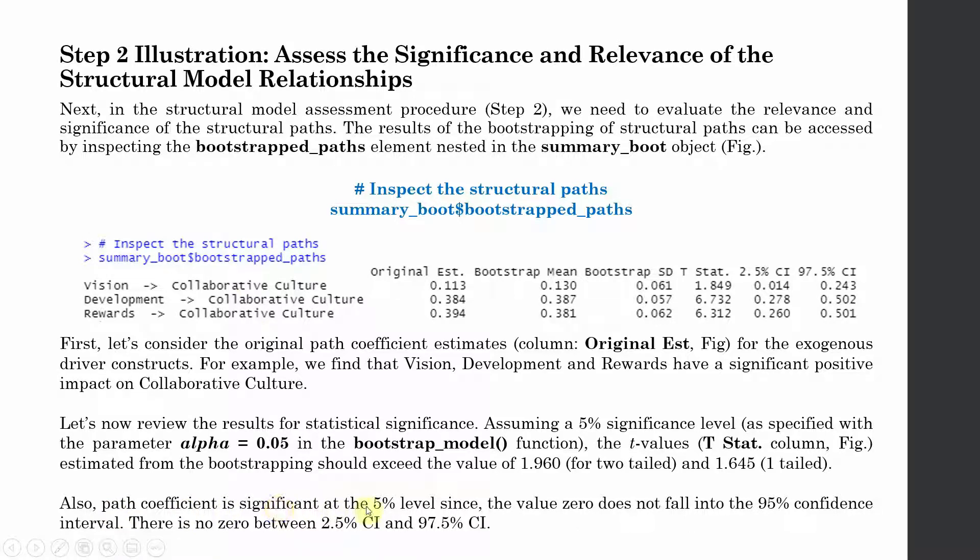Also, the path coefficient is significant at the 5% level since the value zero does not fall into the 95% confidence interval. There is no zero between the 2.5% confidence interval and 97.5% confidence interval. Is there a zero in between? No. Is there a zero in between? No. Is there a zero in between? No.